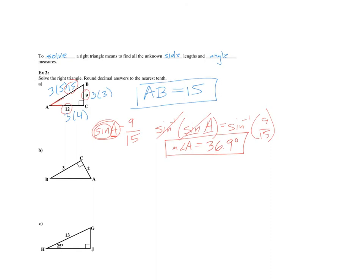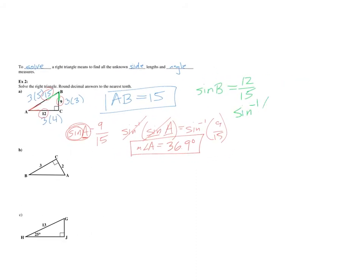Now we figure out angle B. Be careful here — using sine of B, the opposite side to B is not 9, it's 12, over the hypotenuse 15. To get B by itself, take the inverse sine of both sides. The whole purpose of inverse trig ratios is to get the angle measurement by itself. I get 53.1 degrees.